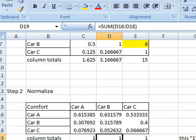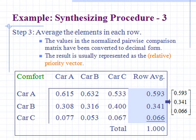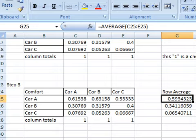The next step is to take the average of the row. I am going to take the average of this row for car A, then for car B, and then for car C.